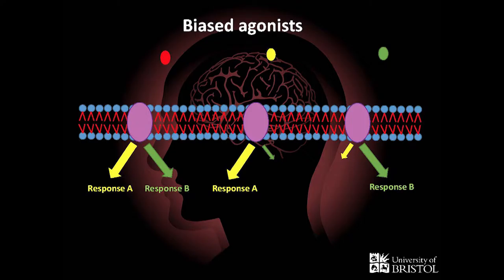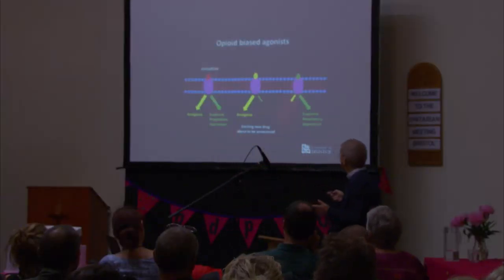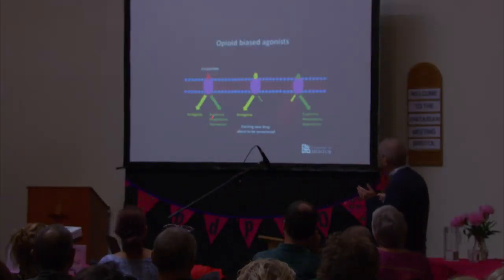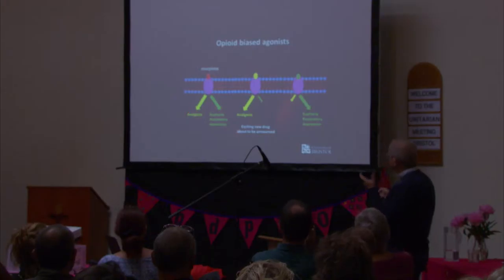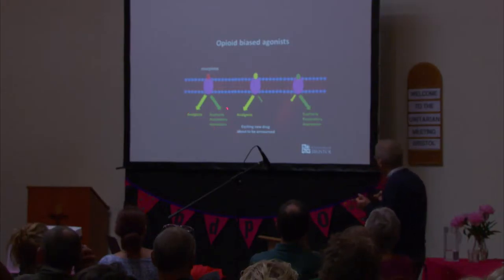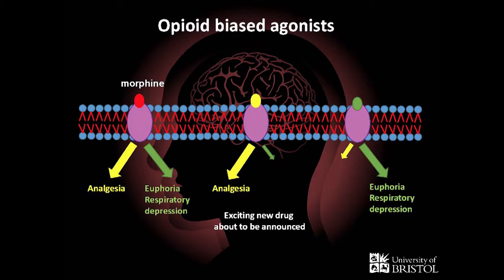Let me put it into context. For a drug like morphine, we get analgesia — pain relief — that's why we want it clinically. But we also get euphoria and respiratory depression: euphoria being the reason it's abused, and respiratory depression being the reason that it kills people.